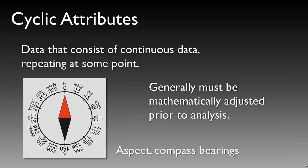Lastly, and not discussed as often but just as important, are cyclic attributes. Data that consists of a continuous type that begins to repeat at some point is considered cyclic. These generally have to be mathematically adjusted prior to any type of analysis. A common example is a compass bearing, where zero and 360 degrees mean the same thing — north. Another example of a cyclic attribute seen often in GIS is aspect.